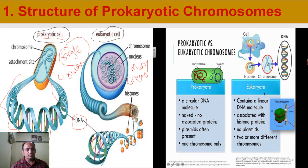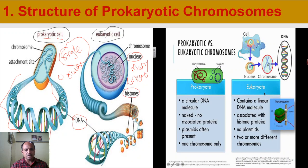In the prokaryotic cell, the nucleus is absent, so whatever chromosome is present is located in the cytoplasm. But in the eukaryotic cell, a well-developed nucleus is present, and therefore the chromosome is enclosed in a nucleus surrounded by a nuclear membrane. There are many histone proteins, and finally the DNA molecule gets supercoiled and forms a linear chromosome.